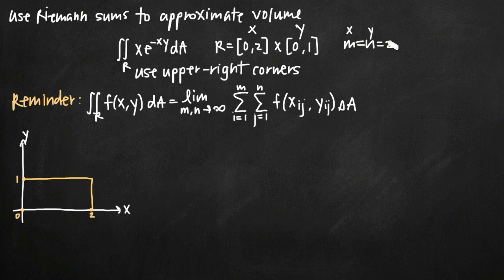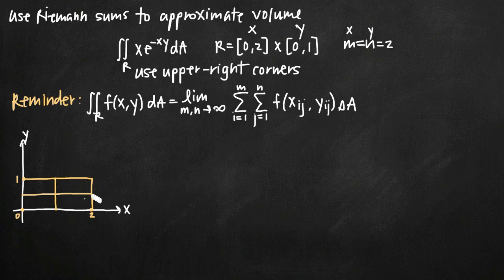Since m equals n equals 2, we're going to take the rectangle we just drew and divide it into two rectangles across by two rectangles tall. You always want to divide the rectangle evenly, so we now have four equal rectangles, divided exactly in half lengthwise and exactly in half widthwise. We've been told to use upper right-hand corners, so we'll look at each of our four rectangles and plot the upper right-hand corner.